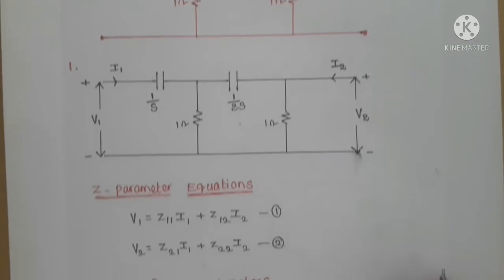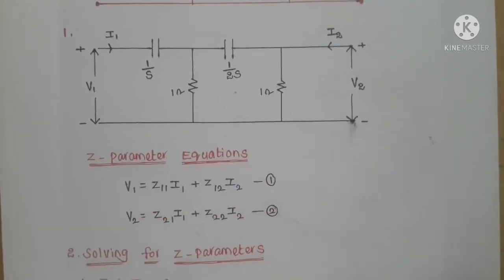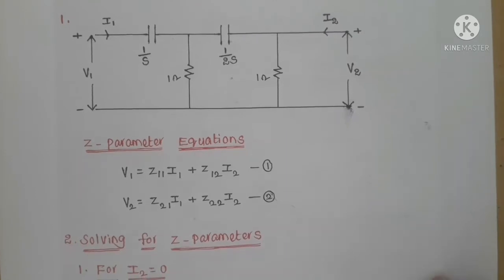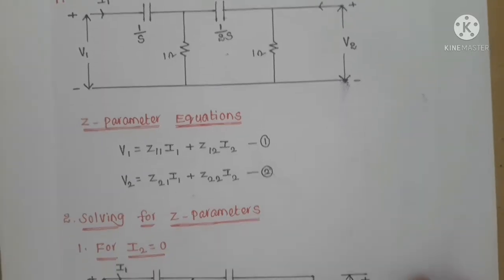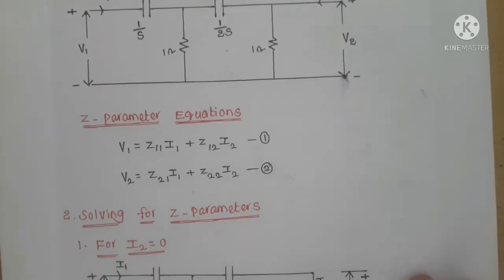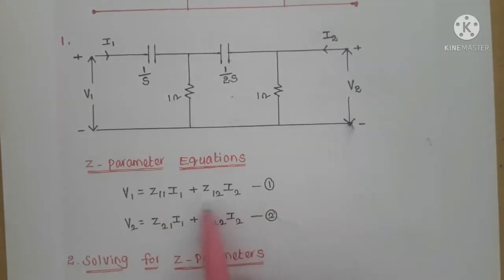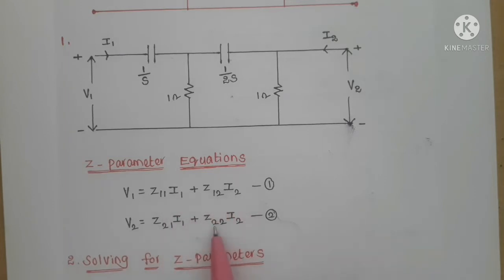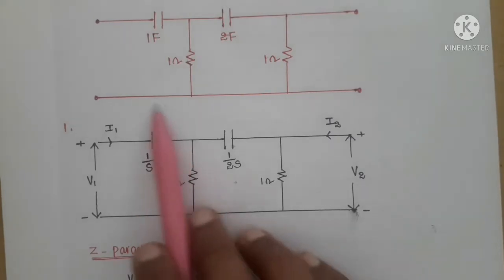The Z parameter equations are: v1 = Z11·i1 + Z12·i2 (equation one) and v2 = Z21·i1 + Z22·i2 (equation two). To solve for the parameters, we follow the standard approach: making i2 = 0 gives Z11 and Z21, and making i1 = 0 gives Z12 and Z22.